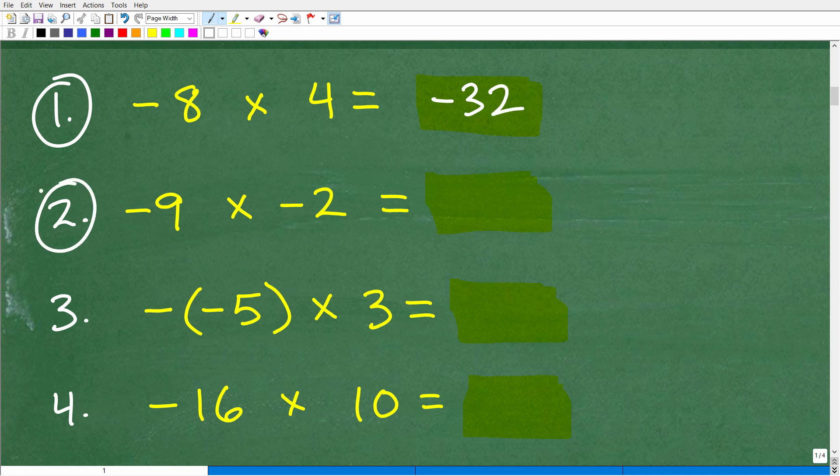Let's move on to our second problem. I'm looking at the signs first. Are they the same or different? This is a negative, this is negative. Same sign. So the answer is going to be positive. So 9 times 2 is 18. Now, I don't have to write a positive 18. If I just write this like this, it's already implied that this is a positive 18.